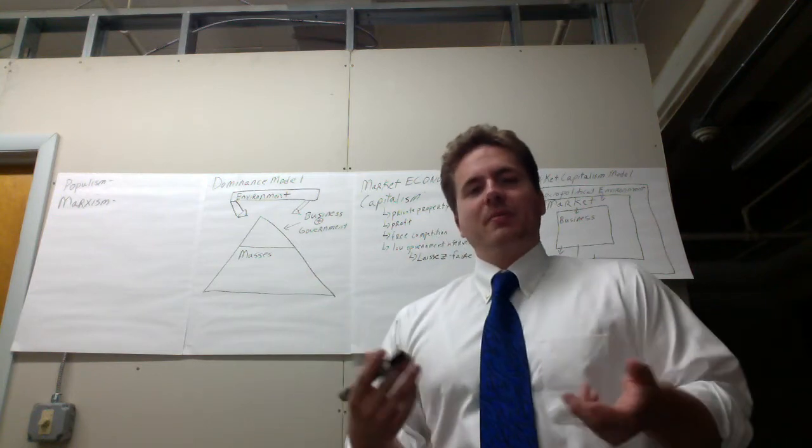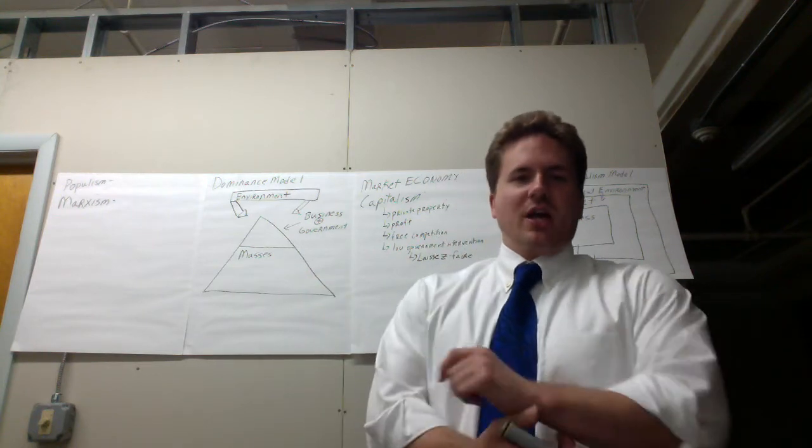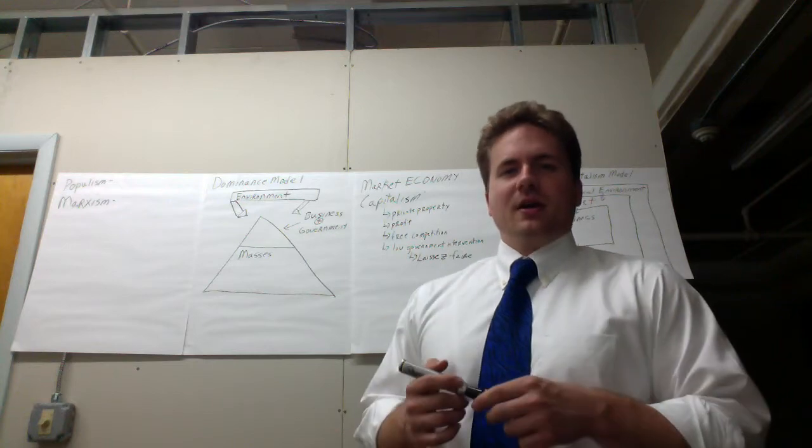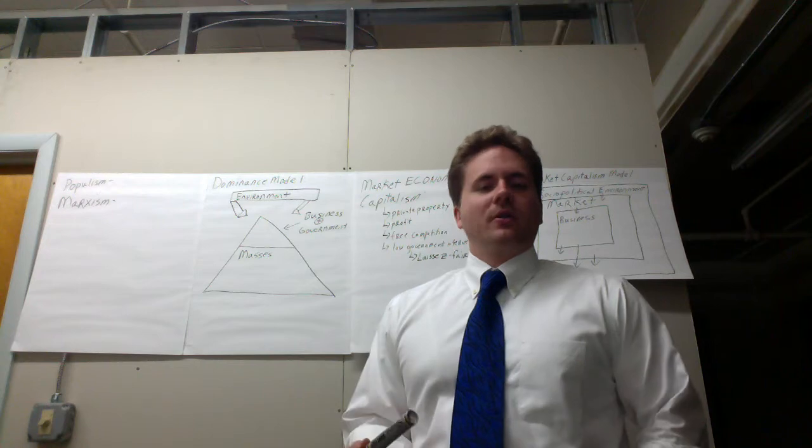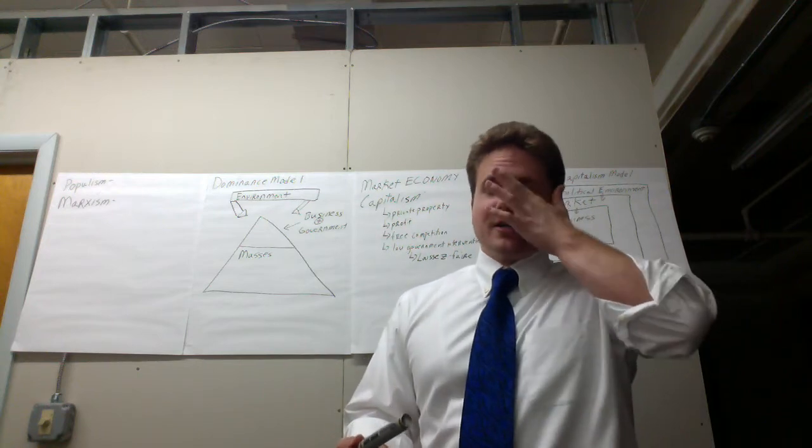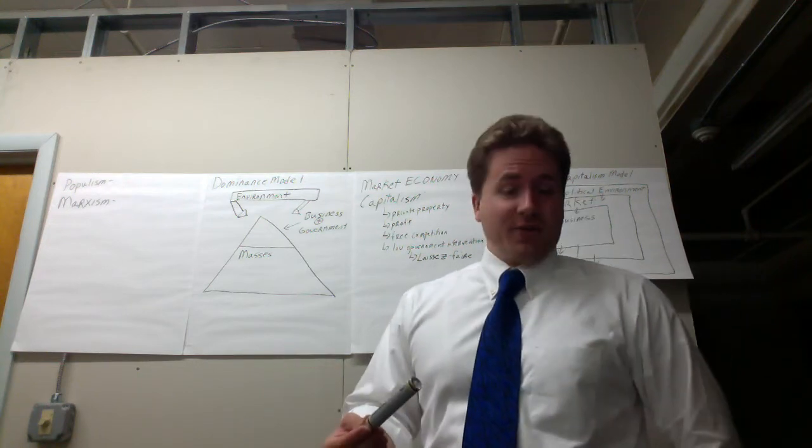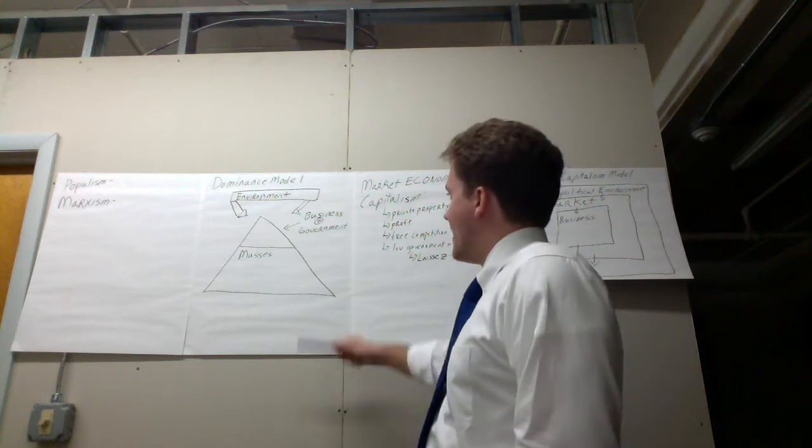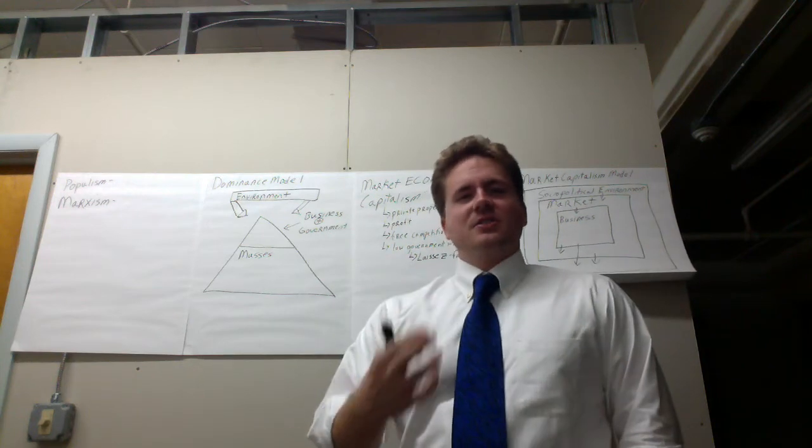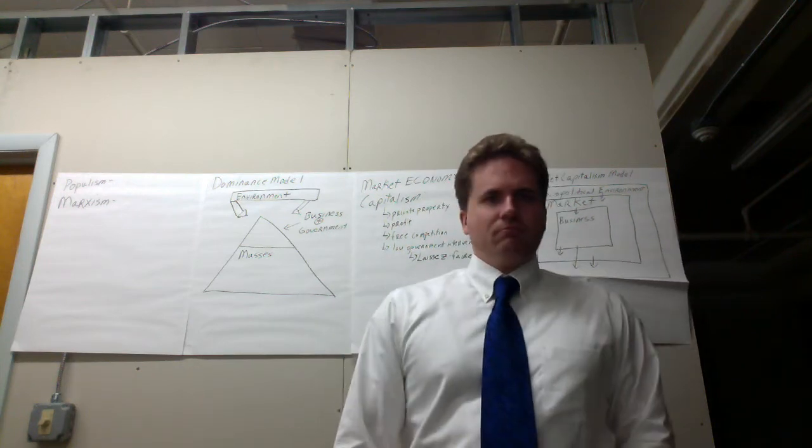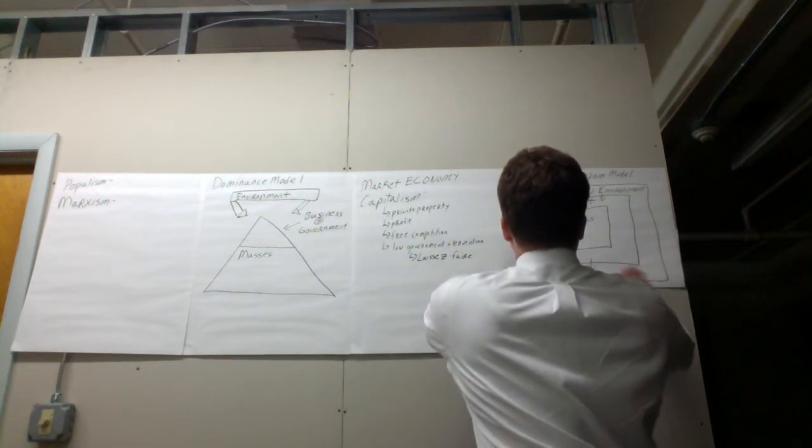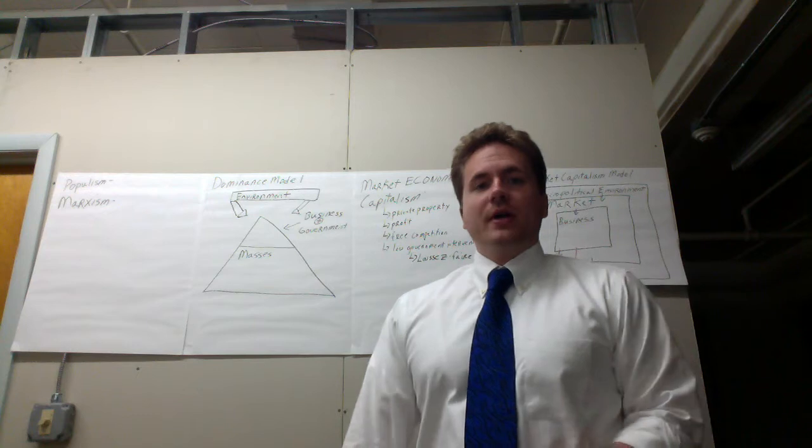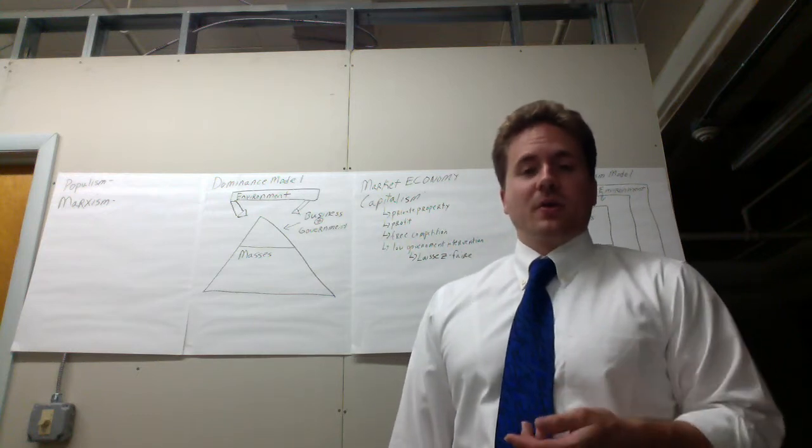So for Marx, and again, I want you to think about this. With these models, you can interchange a variety of characters for the model. They looked at the masses and they called them a proletariat. A proletariat is an urban factory worker. The business and government kind of allegiance would be what they called the bourgeoisie. The bourgeoisie were the property-owning middle class of industrialized Germany.